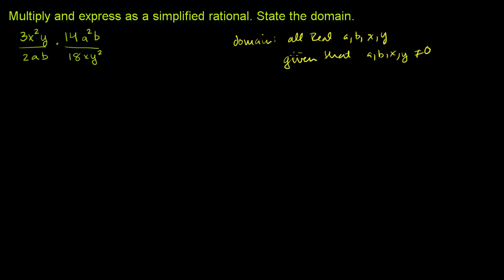Now with that stated, let's actually multiply and simplify this rational expression. So when we multiply, you just multiply the numerators, multiply the denominators. So you have 3x²y times 14a²b in the numerator, and in the denominator we have 2ab times 18xy².